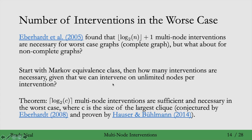We've gone down from a number of interventions that are logarithmic in the total number of nodes in the graph, to a number of interventions that are logarithmic in the size of the largest clique in the graph. This result was first conjectured by Eberhardt in 2008, and then proven by Hauser and Buhlmann in 2014. That's the number of interventions necessary and sufficient to identify a causal graph when we're allowed to do multi-node interventions.